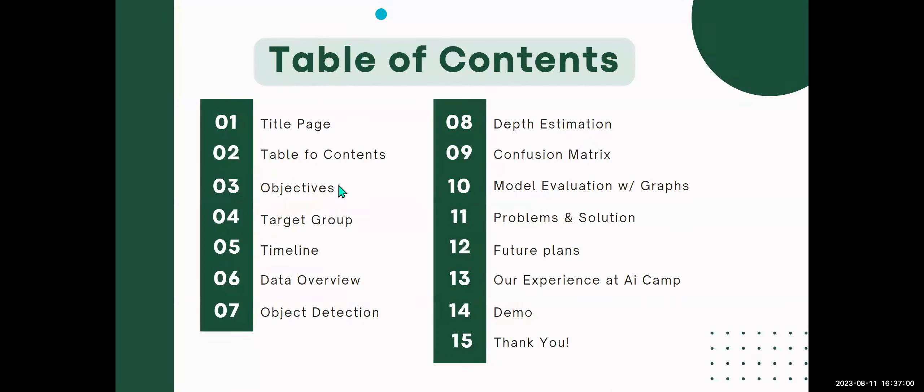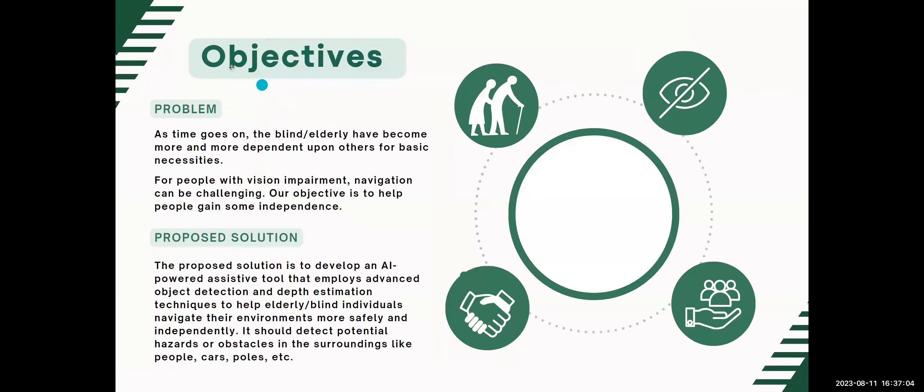Here's our table of contents of what we're going to go over in the slides. First is our objectives. We wanted to help the blind and elderly because they're becoming more dependent on others for basic necessities. For people with vision impairment, navigation can be a challenge, and our objective is to help people gain some independence.